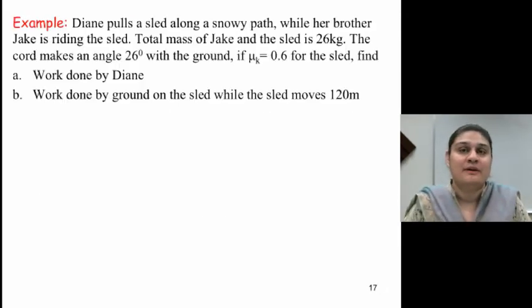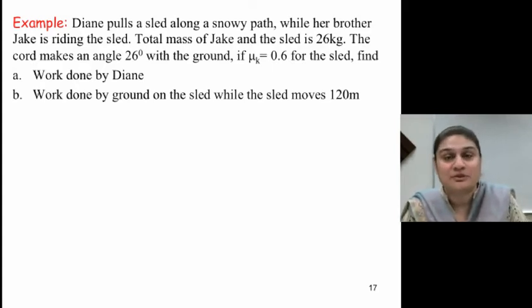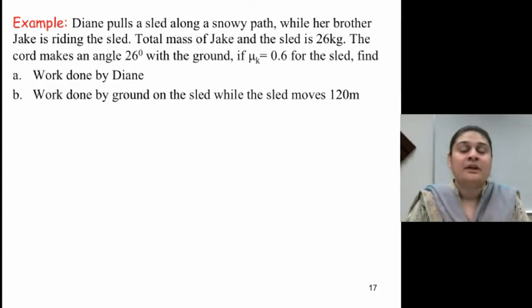So let's do an example with this. Diane pulls a sled along a snowy path while her brother Jake is riding the sled. The total mass of Jake and the sled is 26 kilograms. The cord makes an angle 26 degrees with the ground. If mu k equals 0.6 for the sled, find the work done by Diane and the work done by the ground on the sled while the sled moves 120 meters. This is a good question because now it is going to involve dissipative forces because it introduces friction into our system.